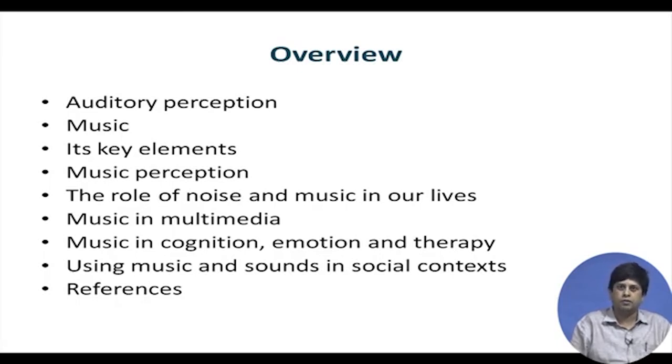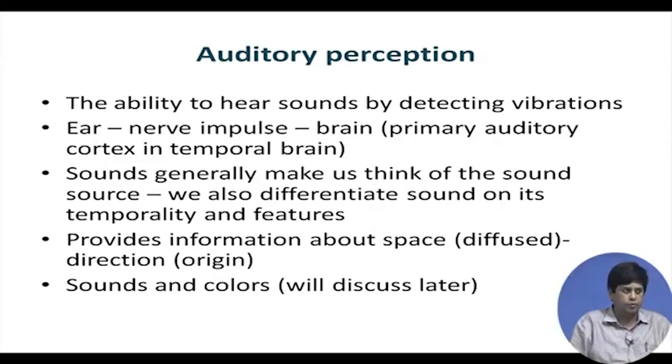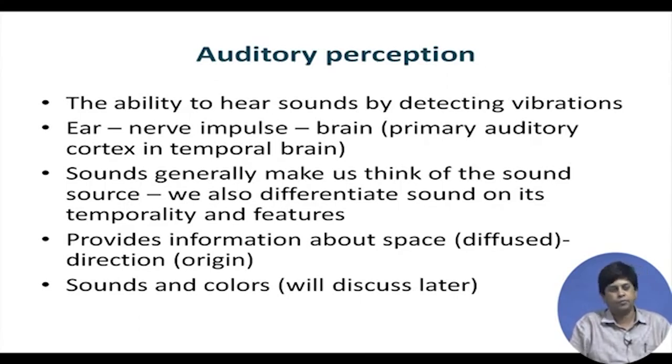Auditory perception — the mechanism involved is the ability to hear sounds by detecting vibrations. You have the ear which generates a nerve impulse, and this is processed by the primary auditory cortex in the temporal side of the brain. Sounds generally make us think of the sound source. So after the technicality, we need to understand how we generally look at sound. When you smell something, you associate the smell with a source. When you hear something, you are generally closing your eyes and trying to identify the source.